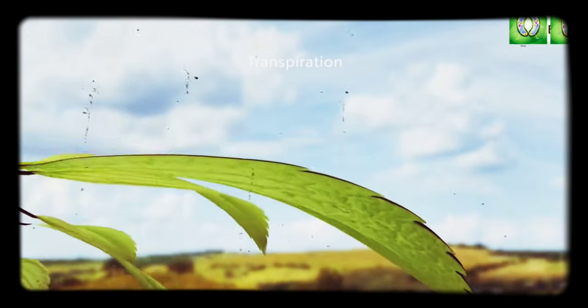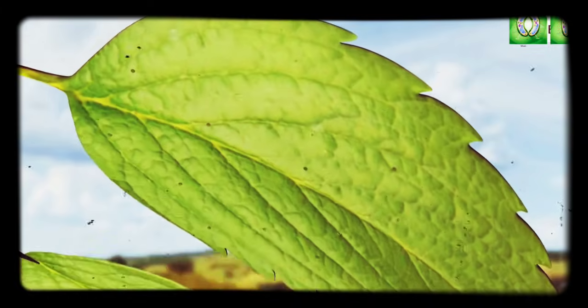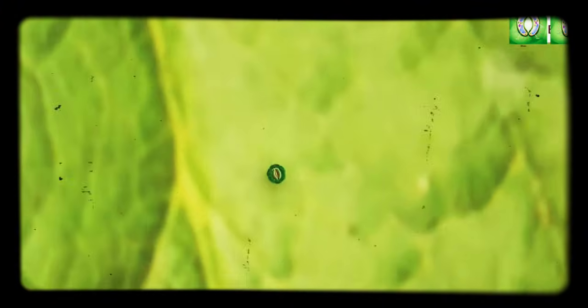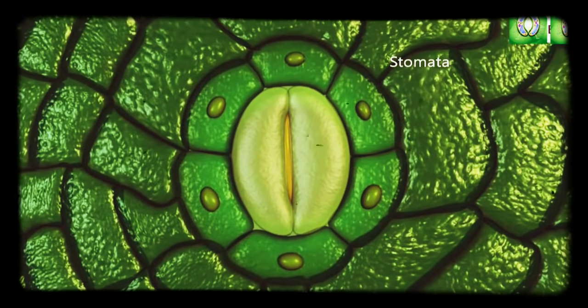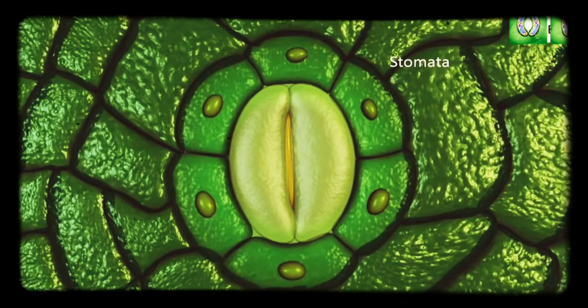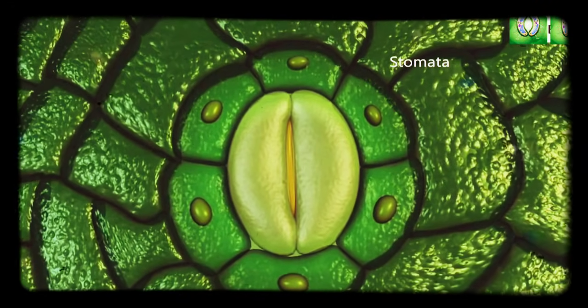The number of stomata is more on the lower surface of leaves. If transpiration happens throughout the day, then there will be a great loss of water. This is controlled by the stomatal opening and closing mechanism.